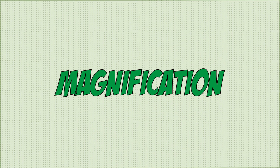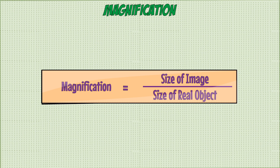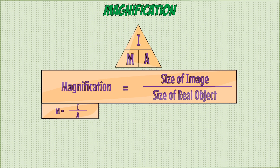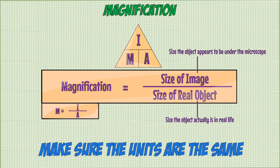When it comes to magnification, you can carry out calculations using the equation: magnification equals the size of the image over the size of the real object. The size of the image is how large the object appears when viewed through the microscope, whereas the size of the real object is its actual size in real life. When using this equation, you need to make sure the units for image size and object size are the same. In most questions these are in millimeters or micrometers.